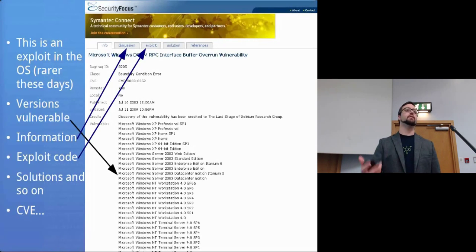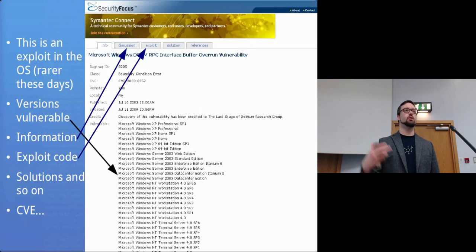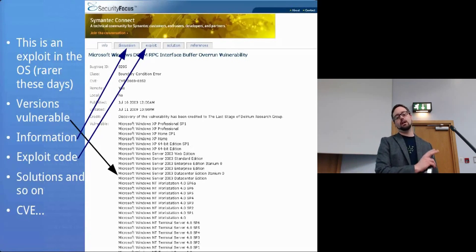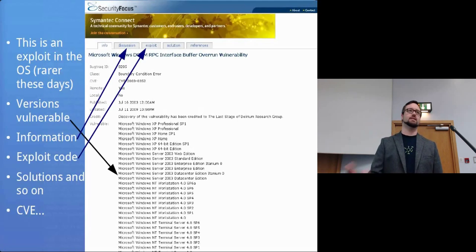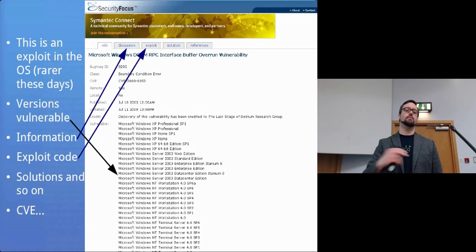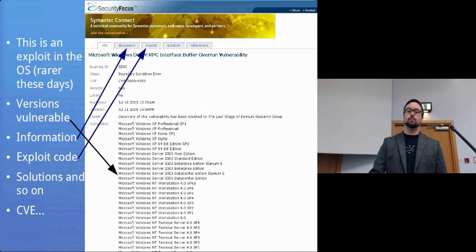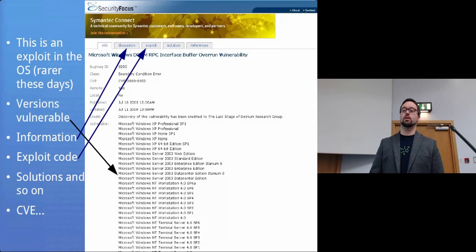It was a buffer overflow in a public service, which means you could basically connect to any vulnerable Windows computer and fire off the exploit. A buffer overflow is using memory in an unsafe way so that you overflow the value in a variable, overwrite the stack, and cause bad things to happen. Specifically it overwrites the instruction pointer — the EIP register — and you get full control over that Windows machine.